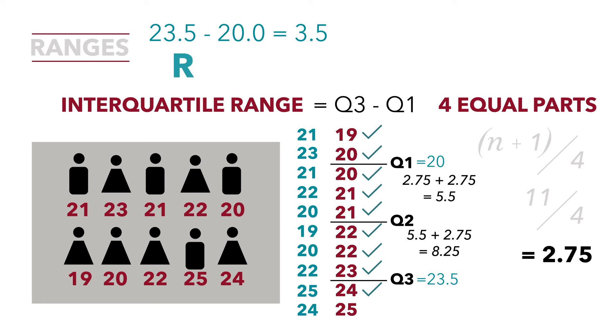So our full range from highest to lowest, 25 minus 19, was 6. The range is 6. The interquartile range, which is the distance between the middle 50 percent of the distribution, is 3.5.